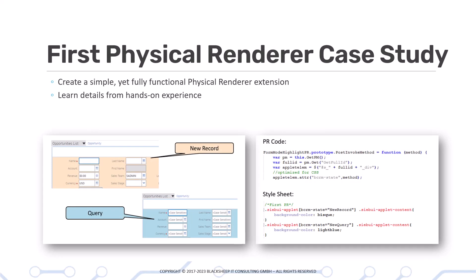Then it's on to a case study called the first physical renderer case study, where you create a very simple but fully functional complete physical renderer extension and you learn all the details you need for later exercises with this hands-on experience. This is a hands-on case study integrated at this point to get you going with the code, because that's what Open UI is all about.